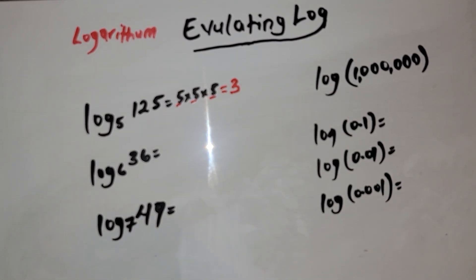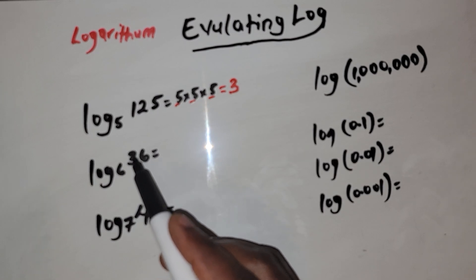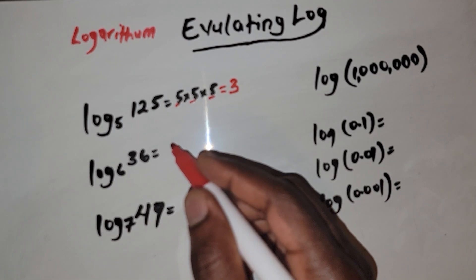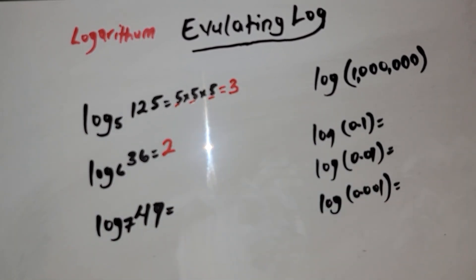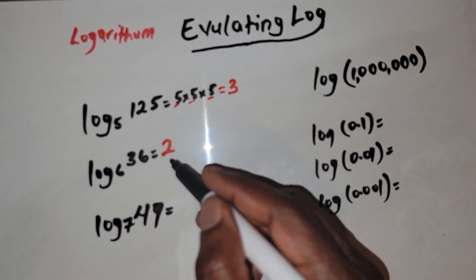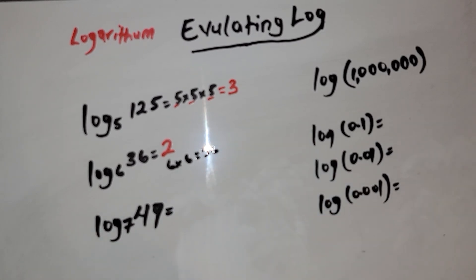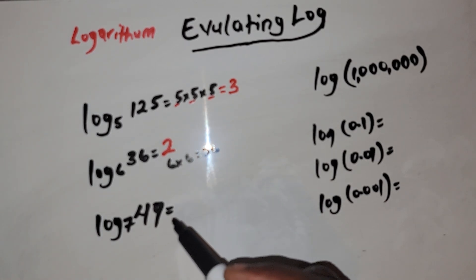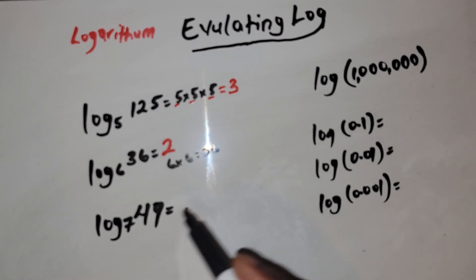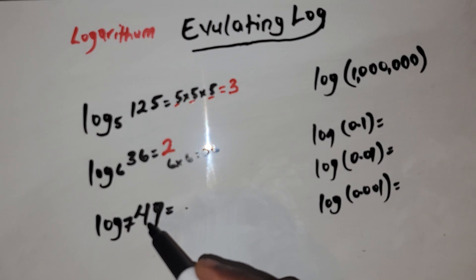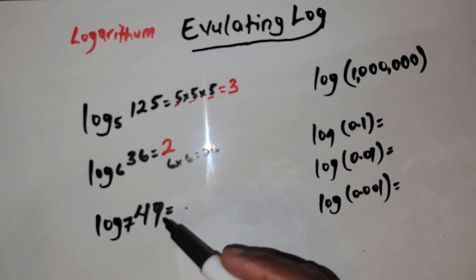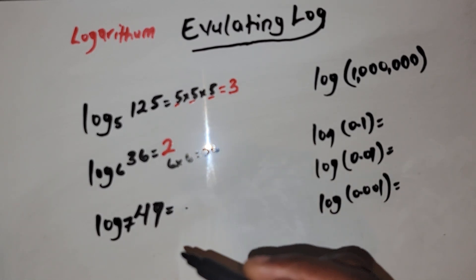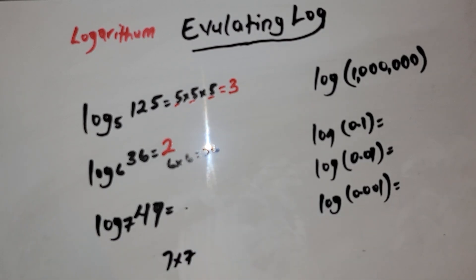Let's try this: 6 to how many power gives you 36? And next we have log base 7 of 49. You want to ask yourself: 7 raised to how many power is equal to 49? 7 times 7 is 49 — we count 1, 2 — so the answer is going to be 2.